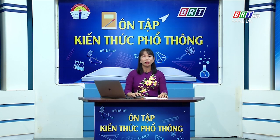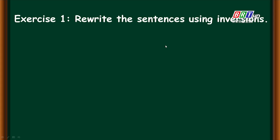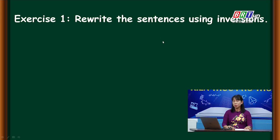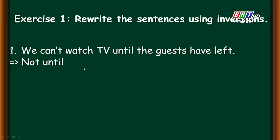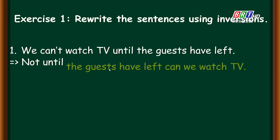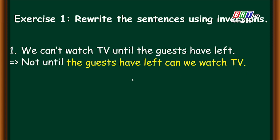Chúng ta vừa học xong bốn trường hợp đảo ngữ thường gặp. Now look at exercise one: rewrite the sentences using inversions. Number one: 'We cannot watch TV until the gas have left.' Người ta yêu cầu dùng 'not until'. Chúng ta đưa mệnh đề trạng ngữ 'until the gas have left' lên đầu và đảo ngữ: 'Not until the gas have left, can we watch TV.'